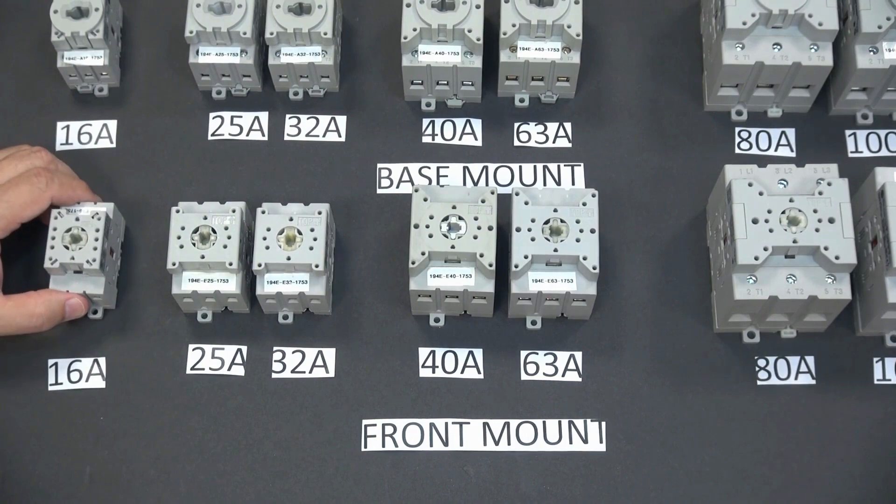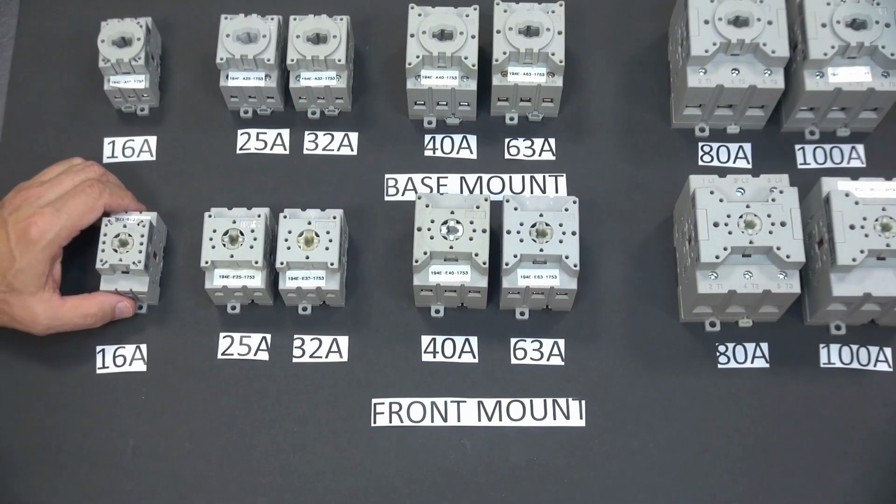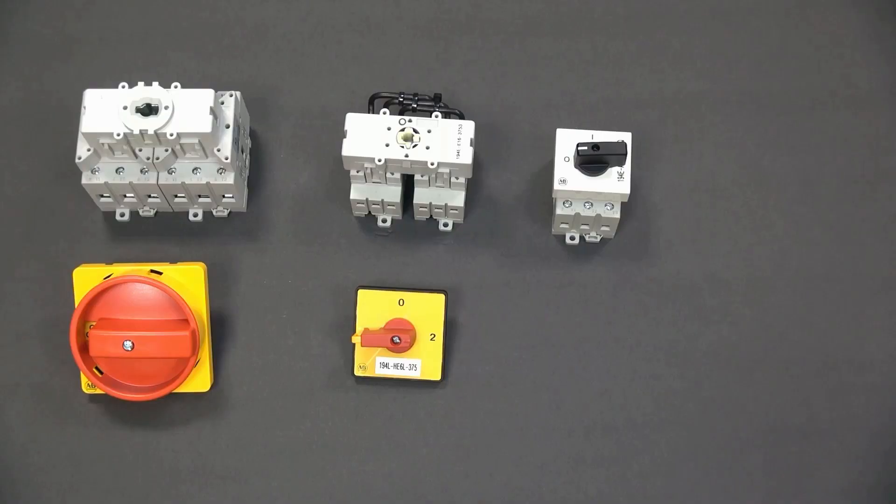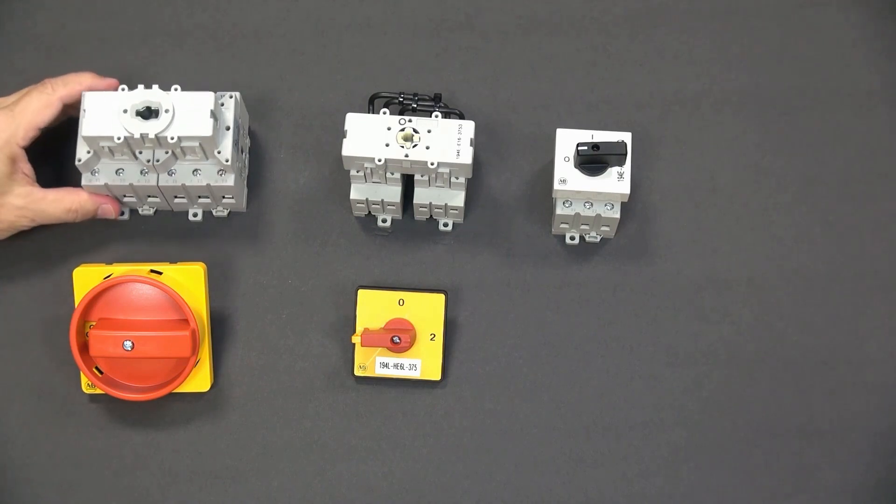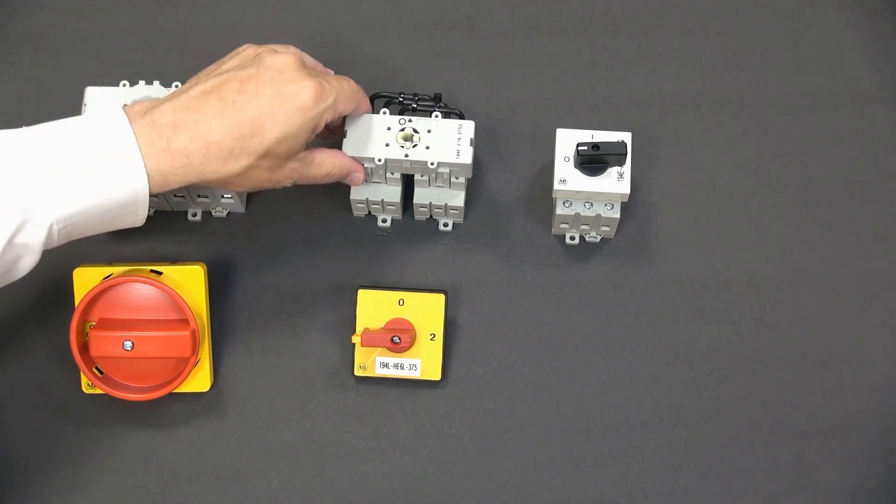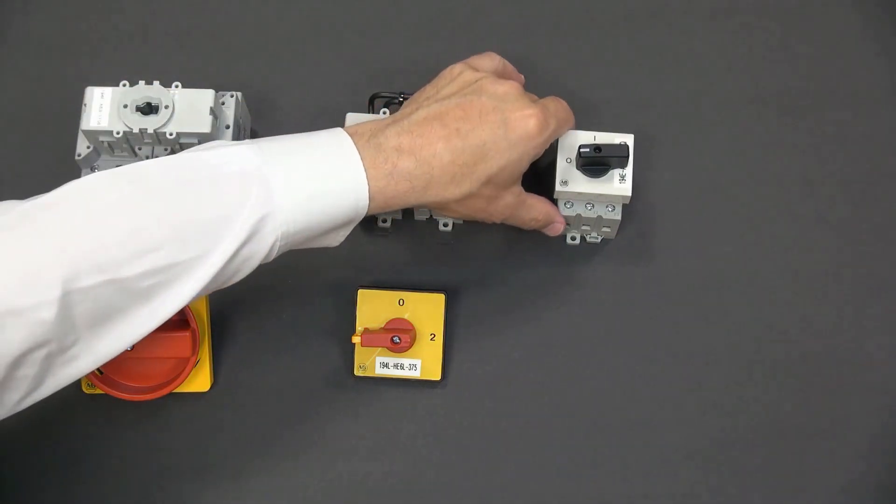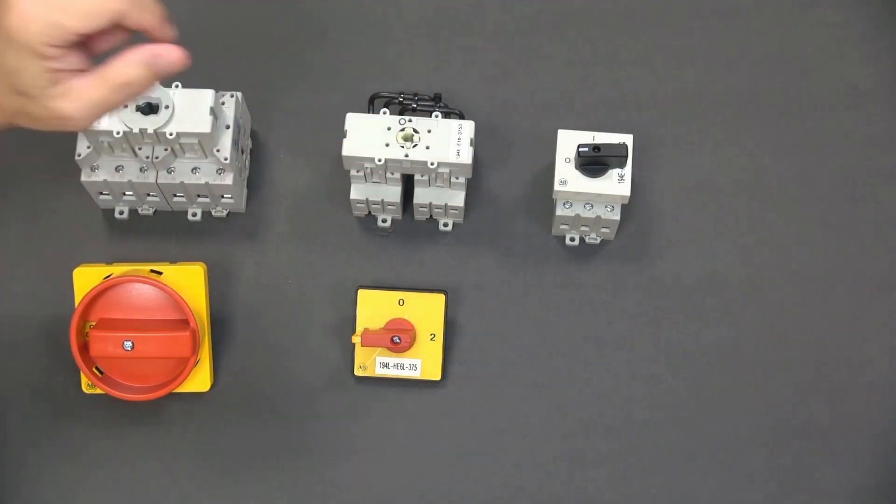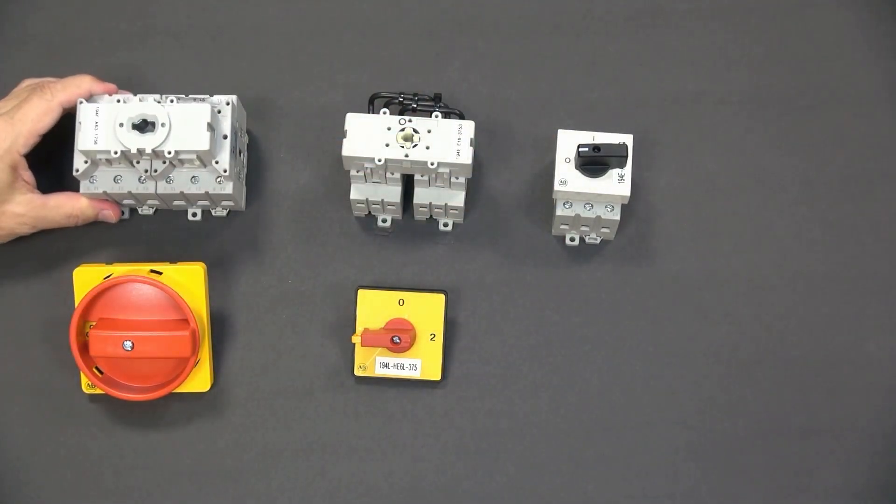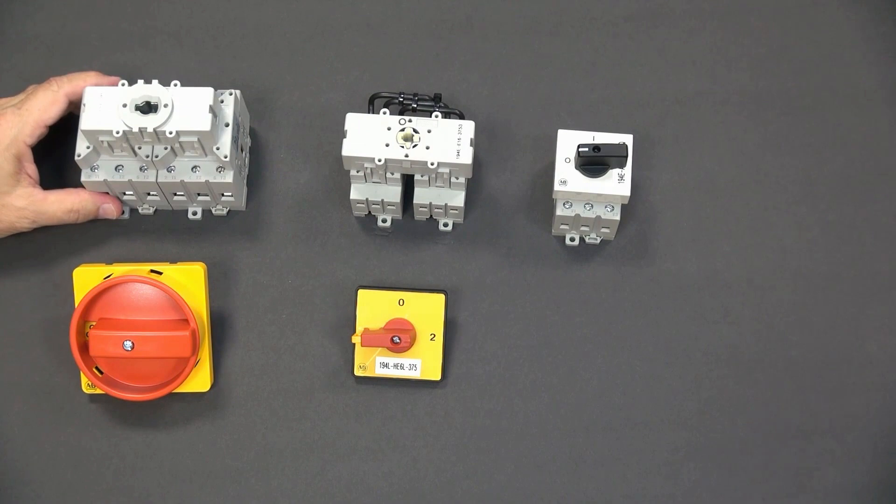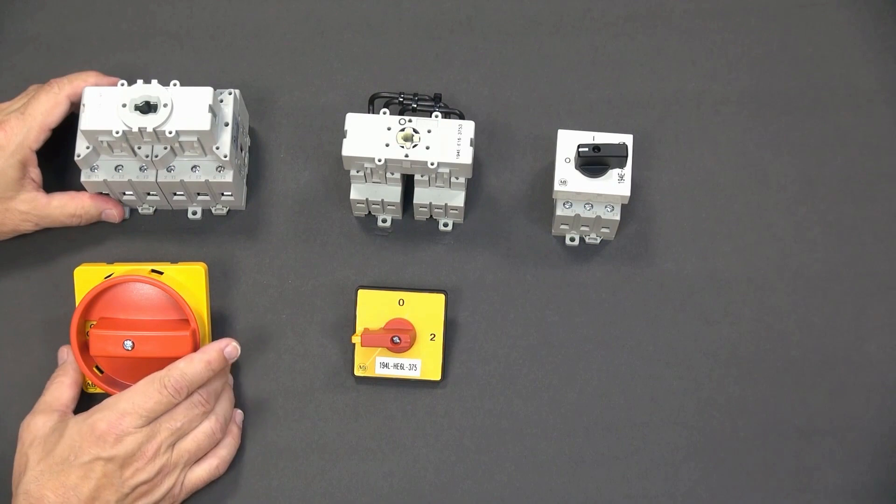Again, this is a door mounted or front mounted switch. We also offer the 194E in a six-pole switch, a changeover switch, and I'm going to talk briefly about this little panel mounted switch here. This is a six-pole base mount switch, 63 amps, but it's available from 16 through 100 ampere ratings.